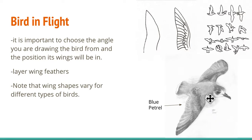Wing shapes and sizes will vary for birds. For example, this blue petrel, which is a seabird, has very long wings. But if you are drawing a different bird it might have different shaped wings. Some birds that are flightless have very small wings, so if you're drawing a flightless bird keep that in mind.